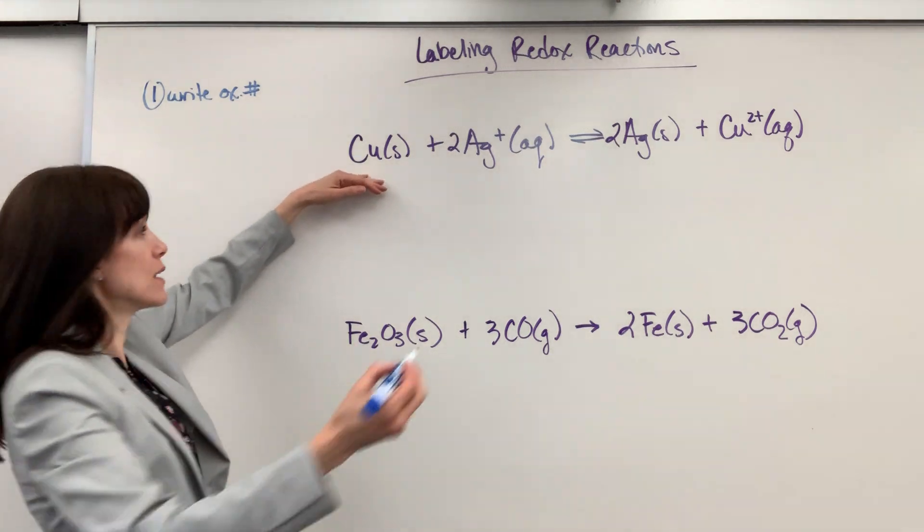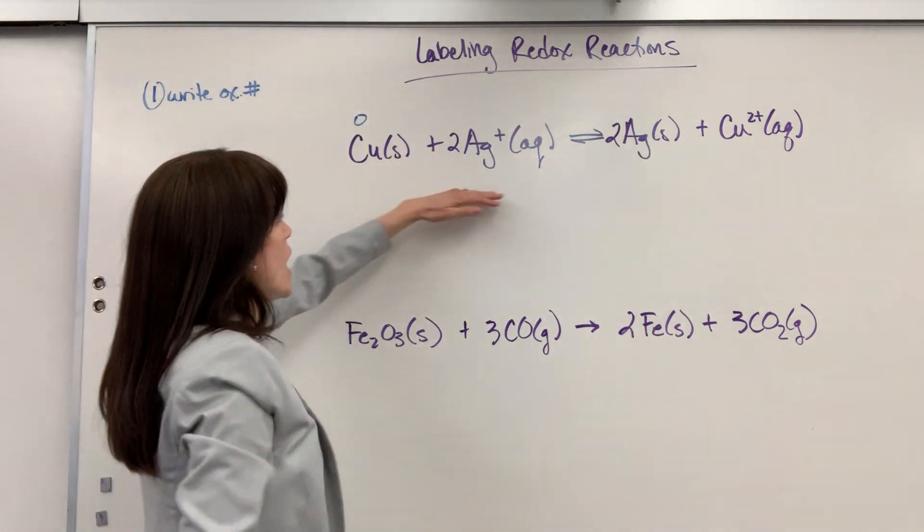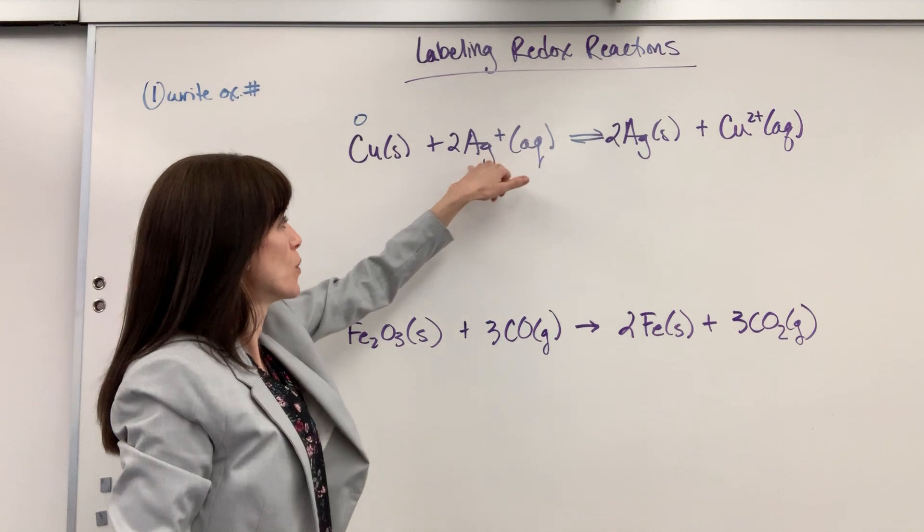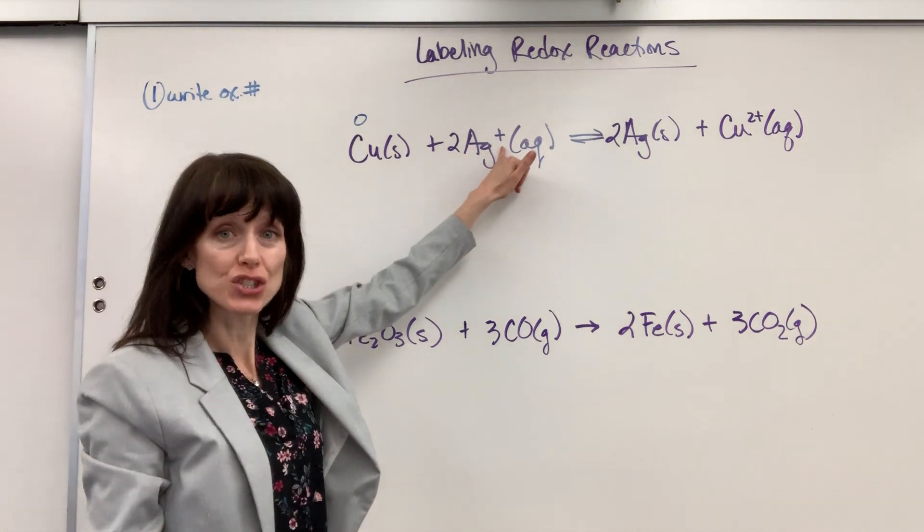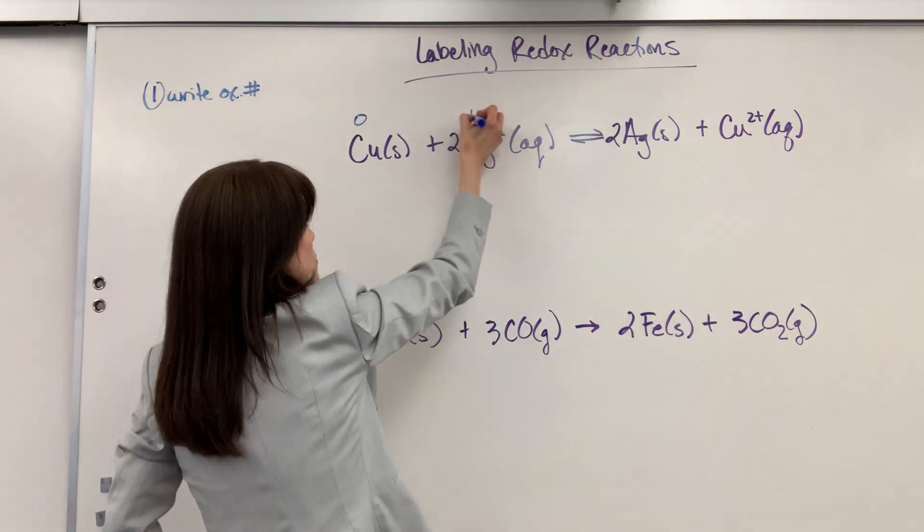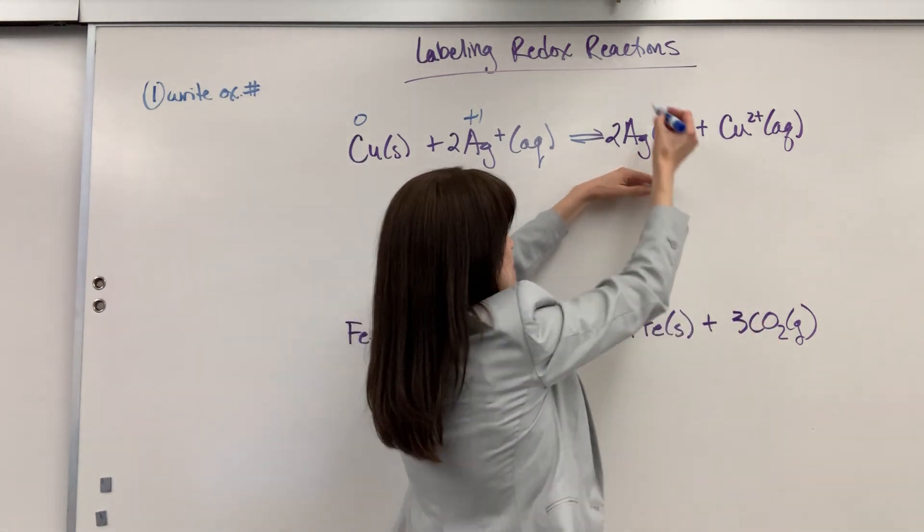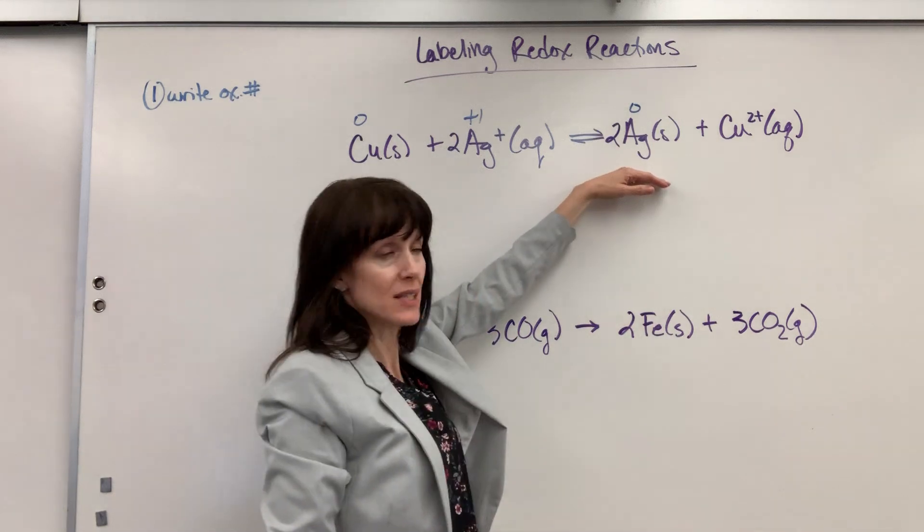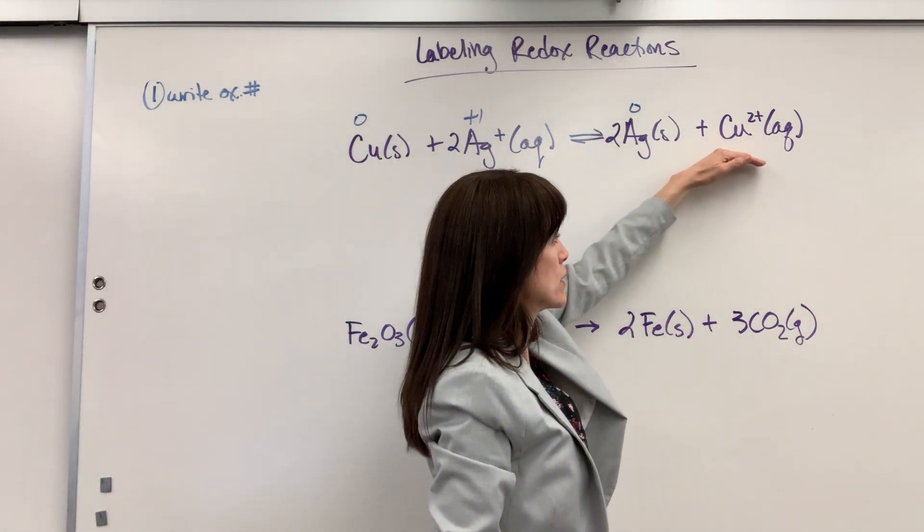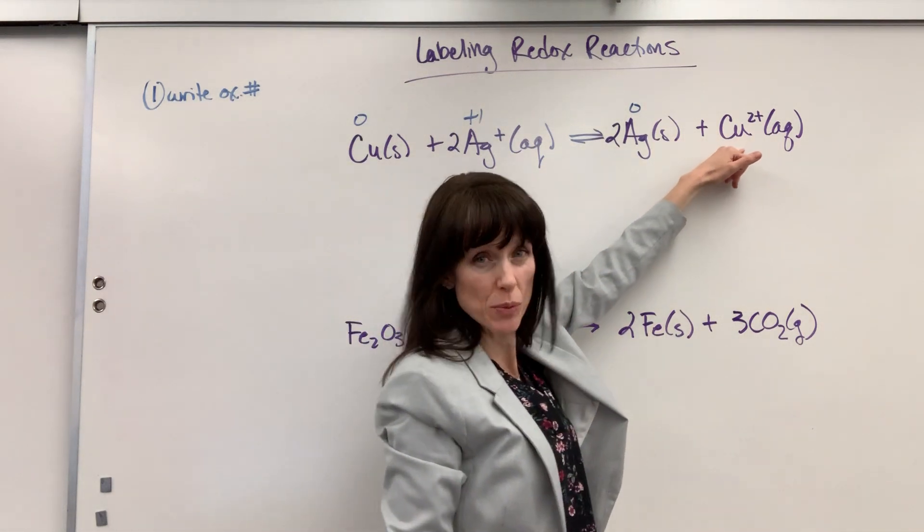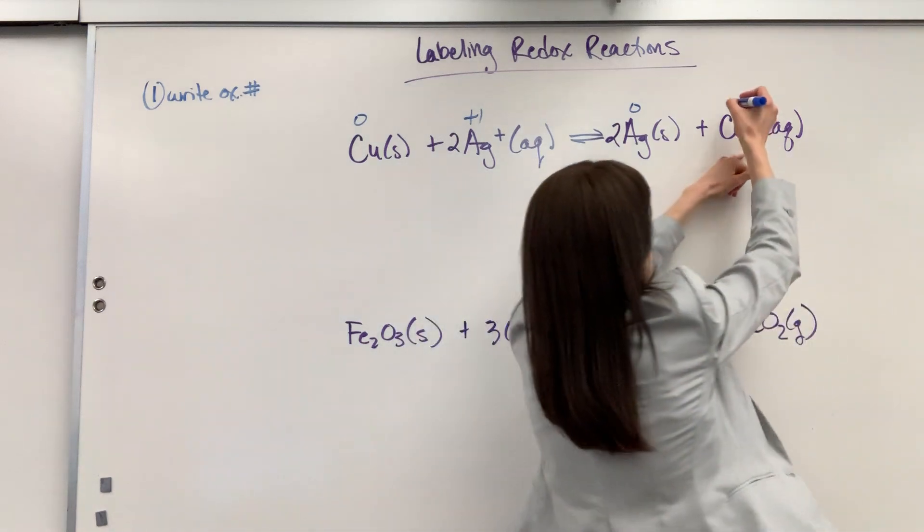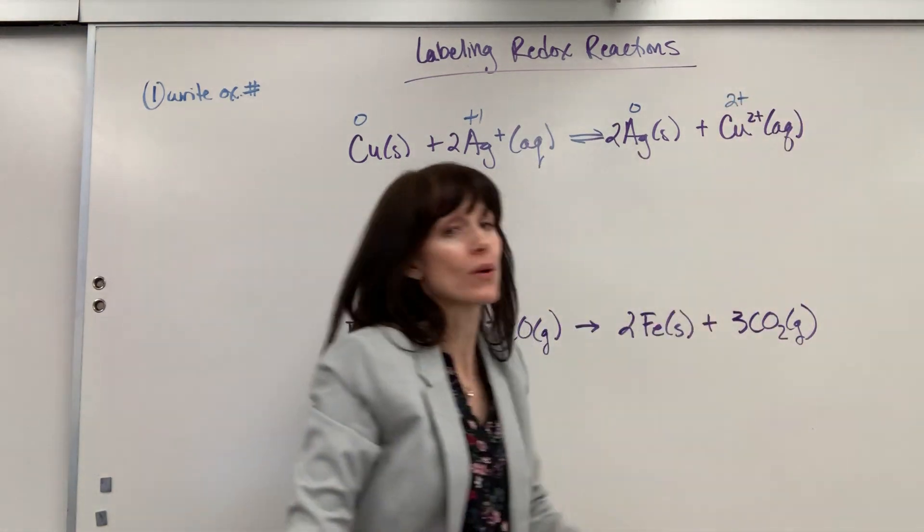Okay, so anything in elemental form is zero. A monoatomic ion, so one atom with a charge, its charge is the oxidation number, so plus one. Here I have an element in its elemental form, silver solid, so that's zero oxidation number. And then this monoatomic ion, the copper is a two plus charge, which means its oxidation number is a two plus.